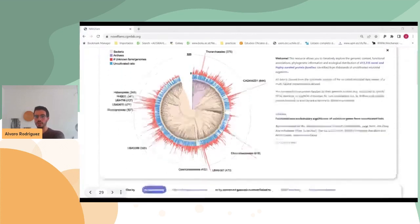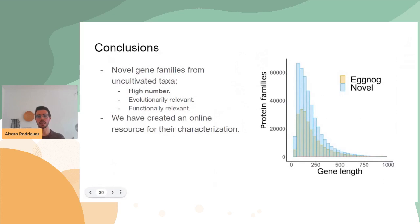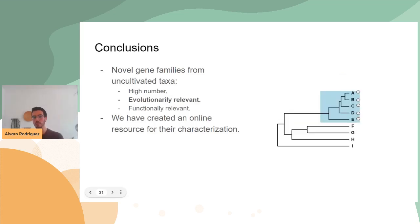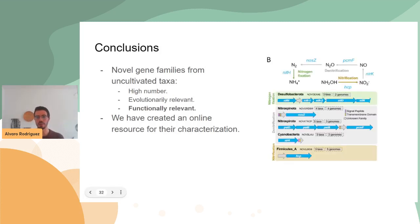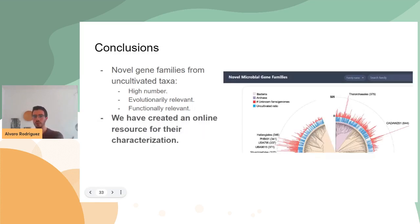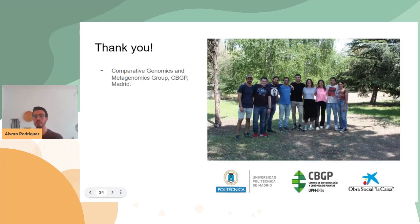As a summary, I would like to highlight that there seem to be a lot of unknown genes from uncultivated species out there, and these unknown genes seem to be very relevant from an evolutionary perspective — for example, many are synapomorphic of very deep nodes of the tree of life. They also seem to be functionally relevant because they are in conserved genomic context with very important genes. Finally, we have created an online tool for making their characterization easier.